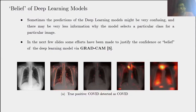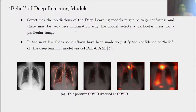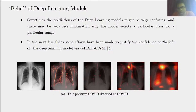Now let me hand over the presentation to my collaborator Nilayan. As you could see in the previous slides, the predictions of the deep learning models were quite confusing, and we did not know why it selected a particular class for a particular image. We have dedicated the next few slides to justifying this confidence of the neural networks through a method called GradCAM.